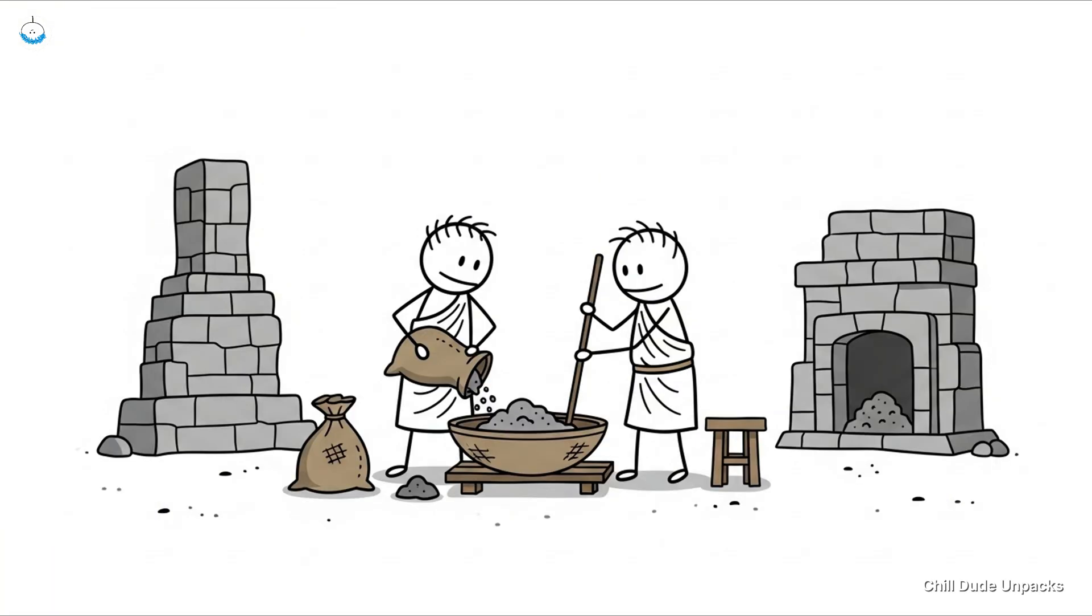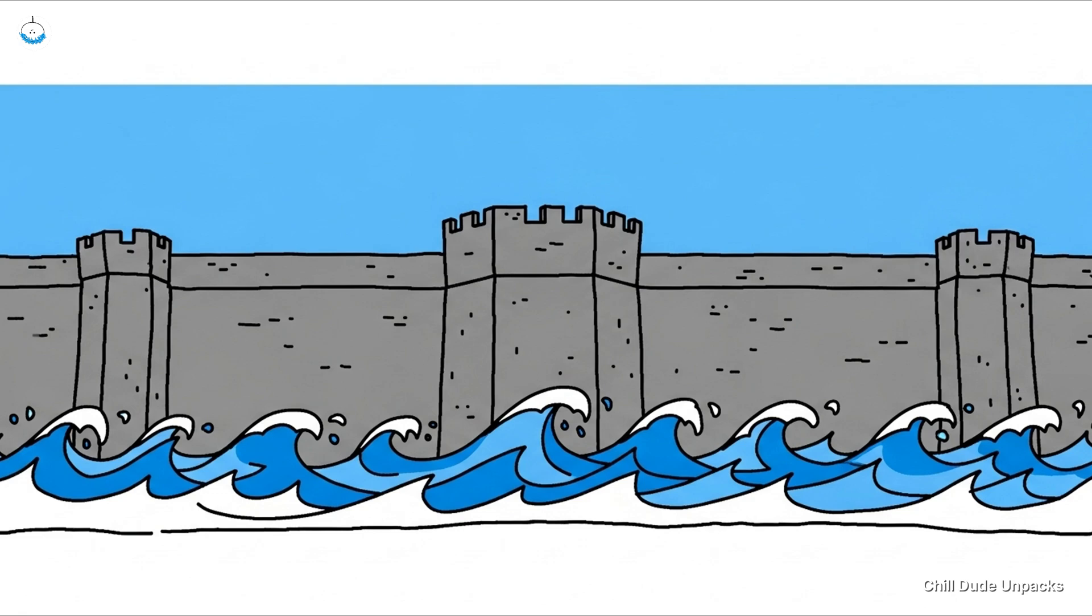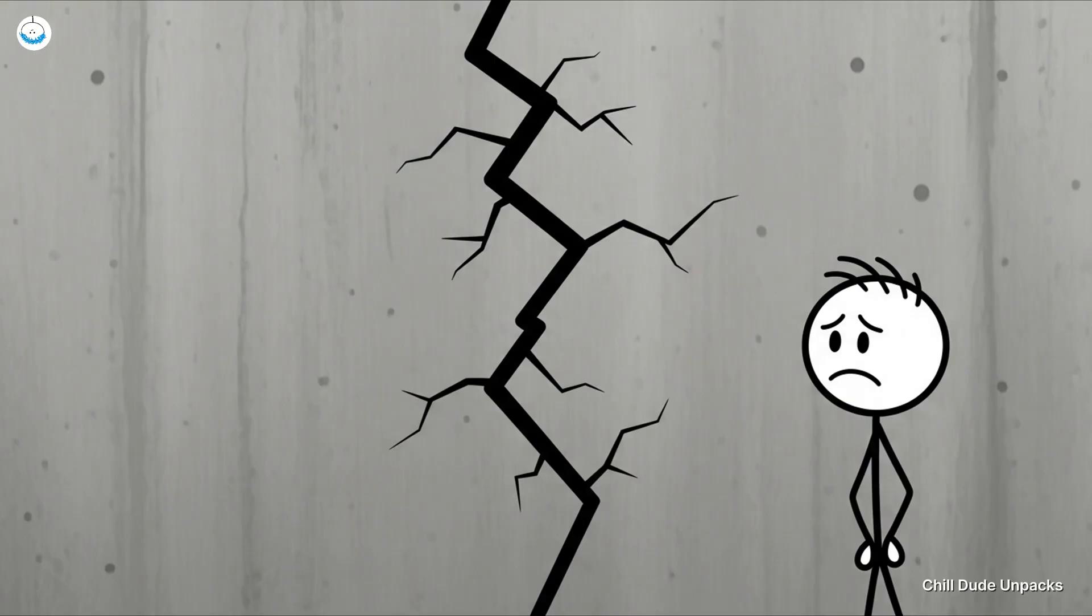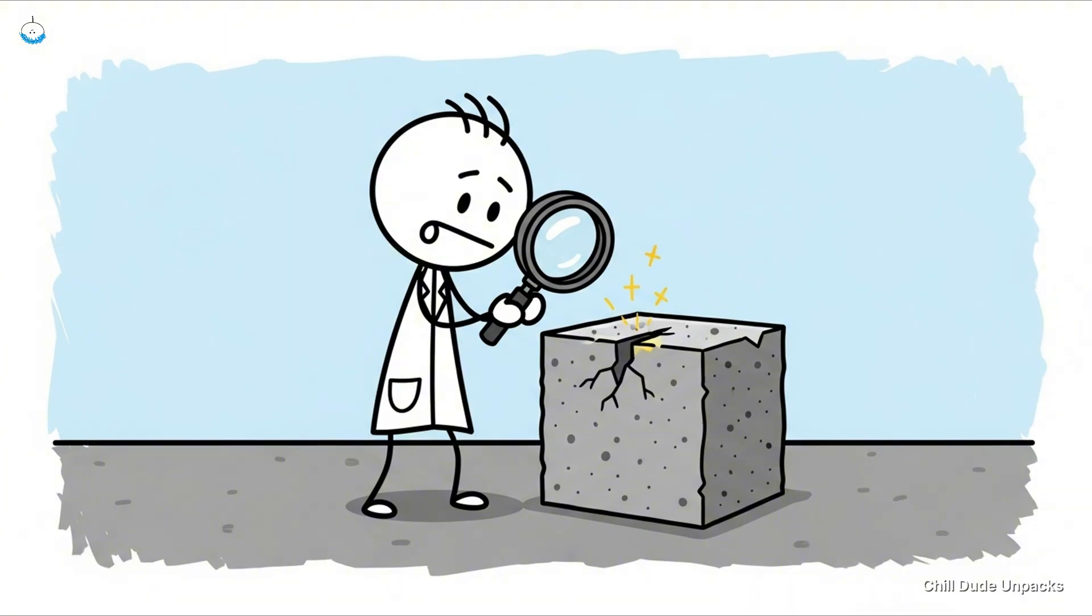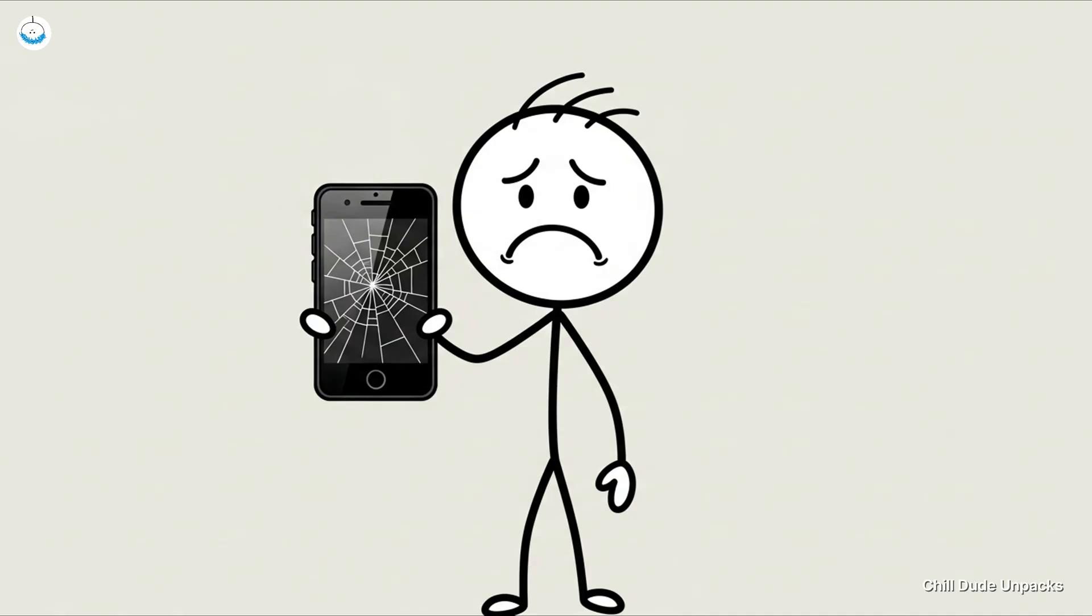Picture ancient Roman engineers mixing volcanic ash, lime, and seawater while wearing those dramatic togas. The result: concrete so durable that some Roman harbors are still holding strong despite being battered by waves for centuries. Meanwhile, modern concrete sometimes cracks faster than a bad relationship. Scientists have found that Roman concrete actually heals itself when it gets small cracks. Yeah, self-repairing, like your phone screen could only dream of doing.